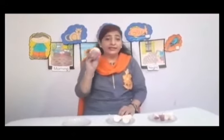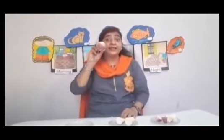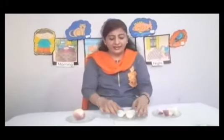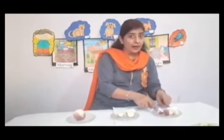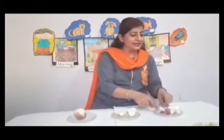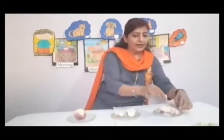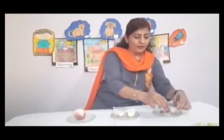Now look here, this is turnip. This is whole turnip. And this is divided into two parts — it's called half. One, two, three, four. It's called quarter. Whole, half, quarter.